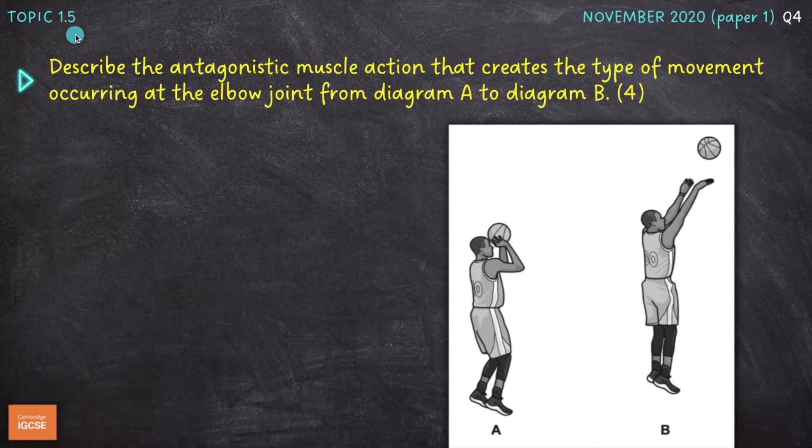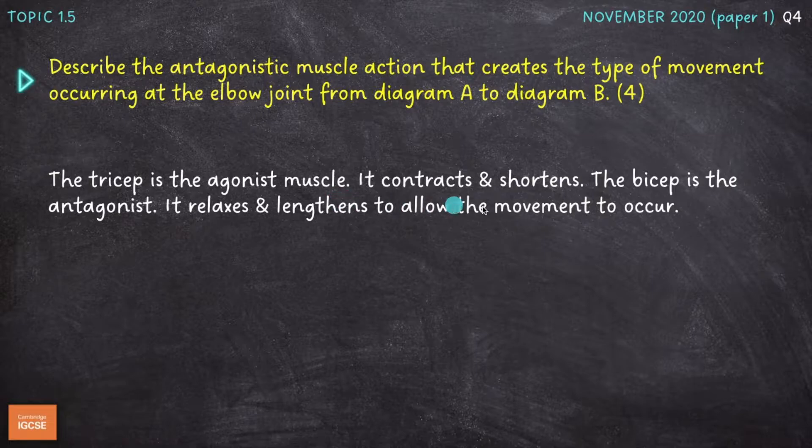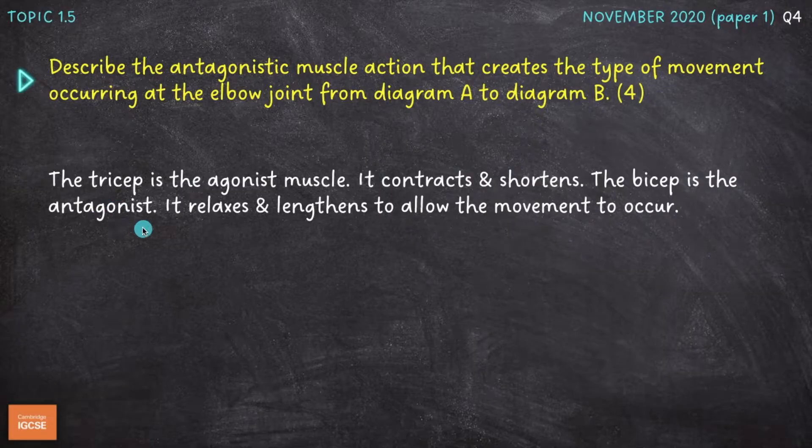But we'll move on now to question number three on topic 1.5. Describe the antagonistic muscle action that creates the type of movement occurring at the elbow joint from diagram A to diagram B. So we already established that that type of movement, the straightening of the elbow there, is extension. And we need to describe the antagonistic muscle action for extension at the elbow. So the tricep is the agonist muscle. It contracts and shortens. So as it shortens, it pulls on the bones in the forearm, and straightens out the elbow, or creates extension at that joint. The bicep is the antagonist. It relaxes and lengthens to allow the movement to occur.